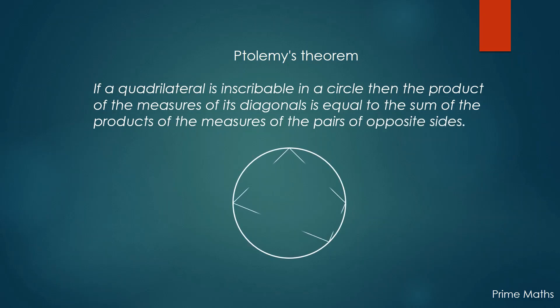As you can see in the figure, we have to show that AC times BD is equal to AB times CD plus AD times BC.